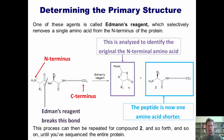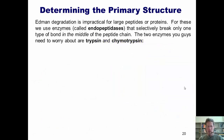So we've now figured out the identity of the N-terminal amino acid. What we can do next is take the shortened peptide and treat it with Edman's reagent again, cleave off the next amino acid, identify it, and then take the next product and repeat — and so forth until we've sequenced every single amino acid in this entire peptide in order. As you can probably imagine, doing this Edman degradation work is really impractical and tedious for large peptides and proteins. For large peptides and proteins, we instead use enzymes called endopeptidases that selectively break only one type of bond somewhere in the middle of the peptide chain.